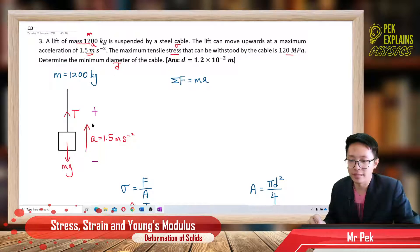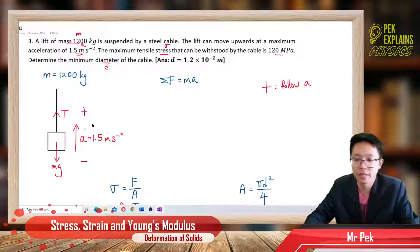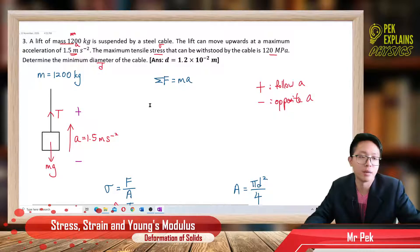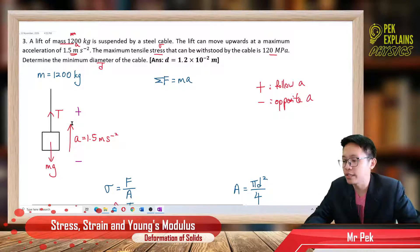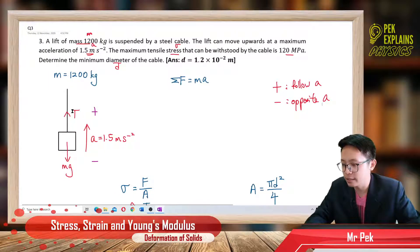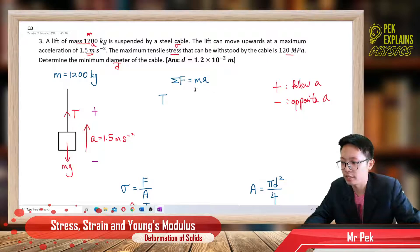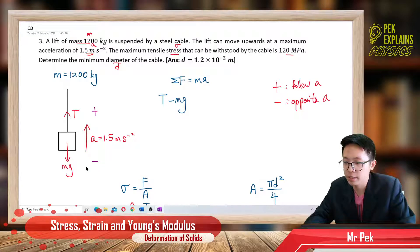Remember: follow acceleration is positive, opposite the acceleration is negative — that's how we determine the sign of the forces. So tension is positive because it follows the acceleration. mg is negative because it is opposite the acceleration.